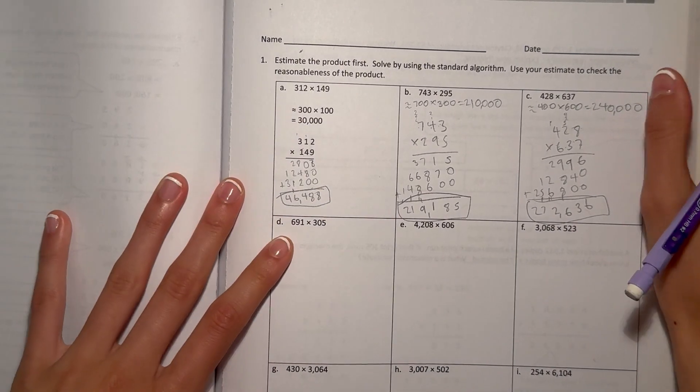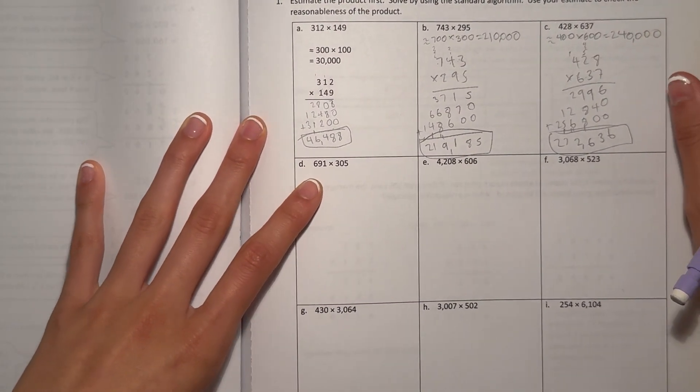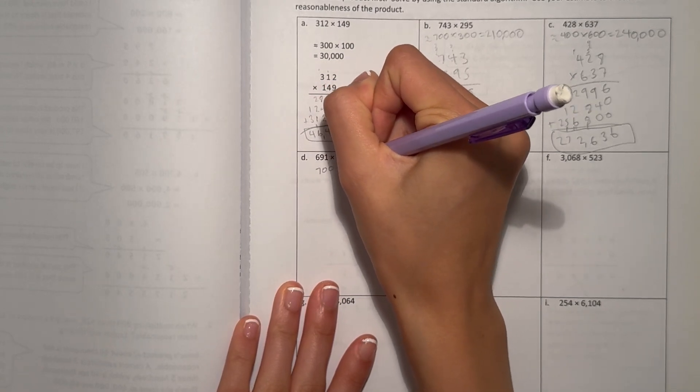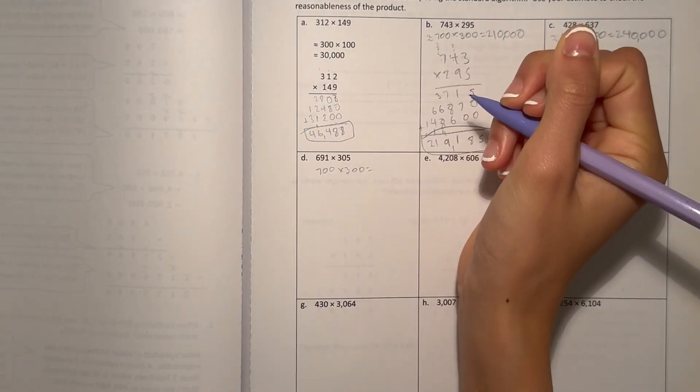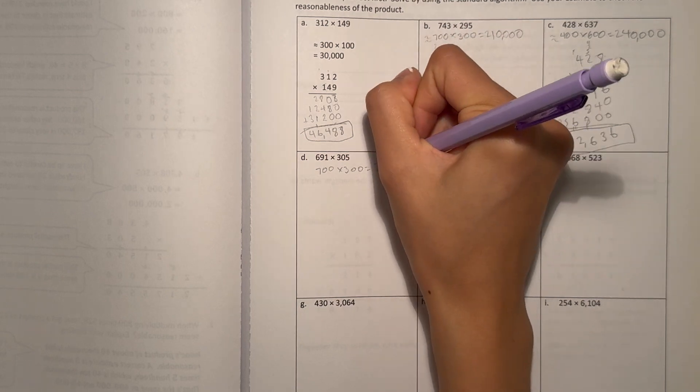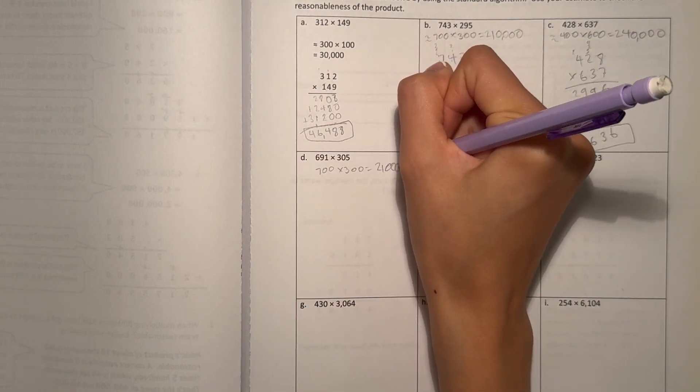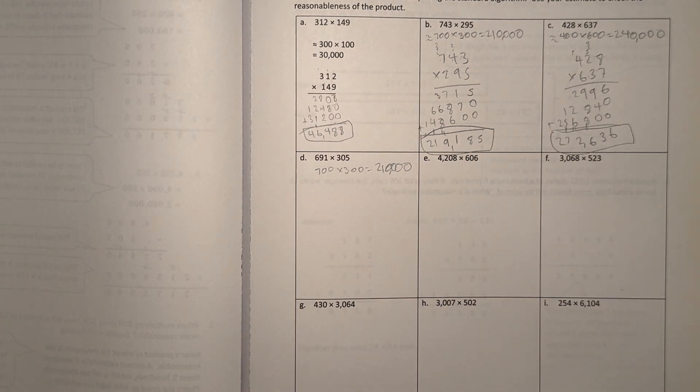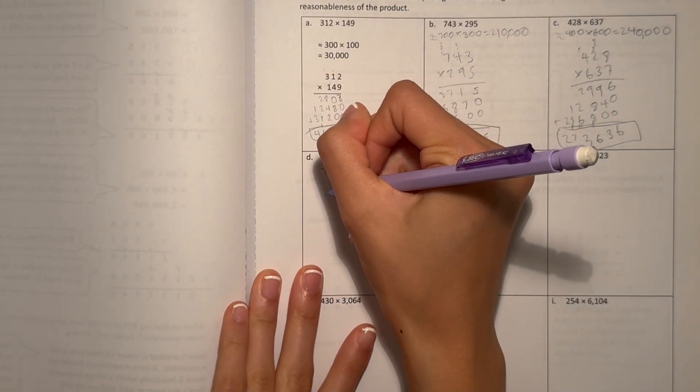And D. 691 times 305. Let's estimate. That would be 700 times 300. 7 times 3 is 21. And add the zeros. So 210,000 would be our estimate. Now let's multiply.